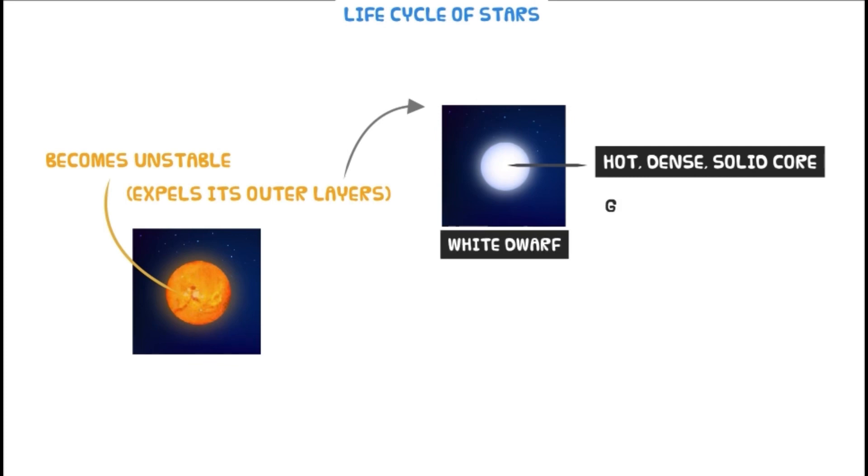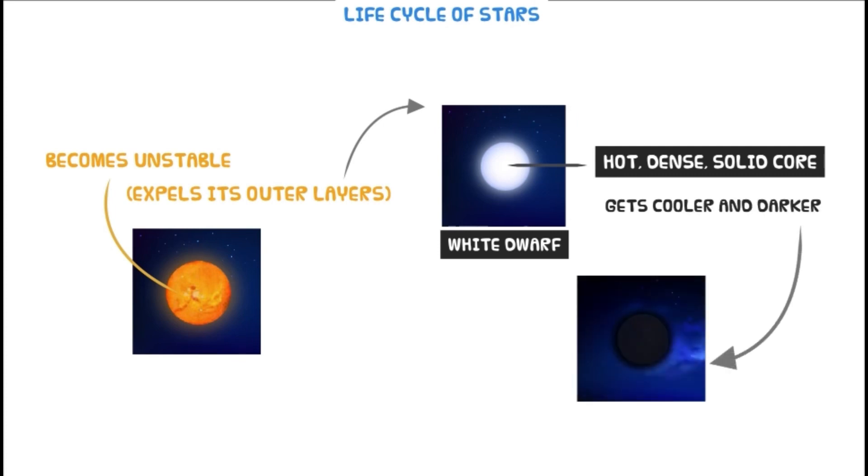And after many years, as it gets cooler and darker, the white dwarf converts into a black dwarf. At the black dwarf stage, the star no longer has enough energy to emit light.